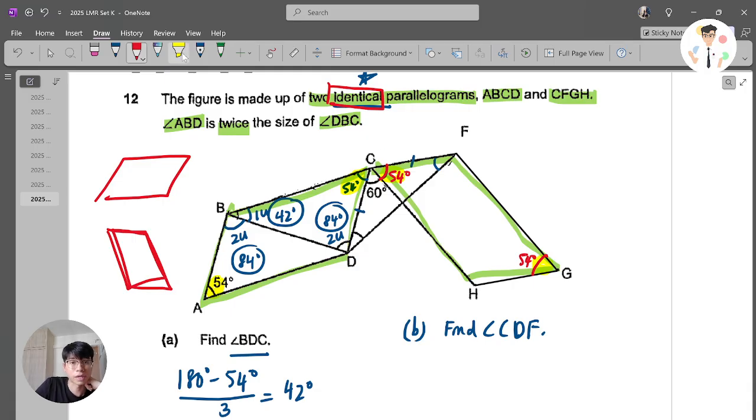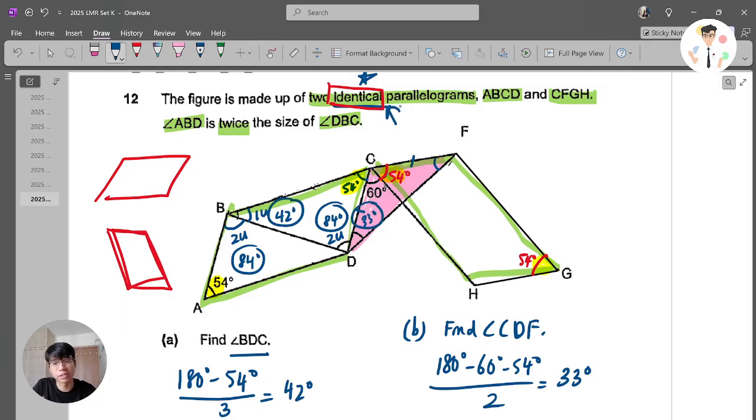How to find CDF? Again, 180 minus 60 minus 54, which is the whole angle here. Then I just need to divide by 2. Then that gives you 33 degrees. And which is the angle here. That's why I keep on mentioning the word identical is actually very important. Because some of you may get tricked by using, oh this is a straight line, 180 minus 54 minus 60. Yeah, I got an angle here. No, no. This is not a straight line.